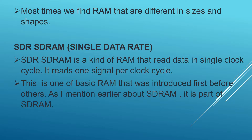Single data rate, also known as SDR SDRAM, is a kind of RAM that reads data in a single clock cycle — one signal per clock cycle. It is one of the basic RAMs introduced before others. As mentioned earlier, single data rate is actually a part of synchronous dynamic RAM — it is an example of SDRAM.